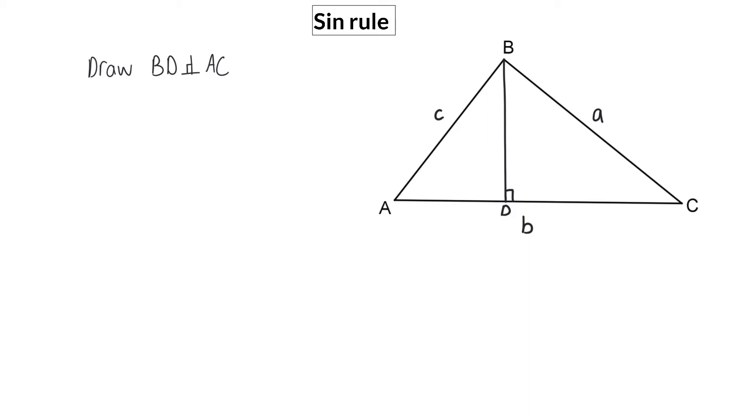I'm going to start off working in triangle ABD and in this triangle, I'm going to determine the sin ratio from angle A. Sin is opposite over hypotenuse and therefore sin of angle A will be side BD divided by side AB, which is small c. Here I can get BD alone on the right by multiplying with C on the left hand side.